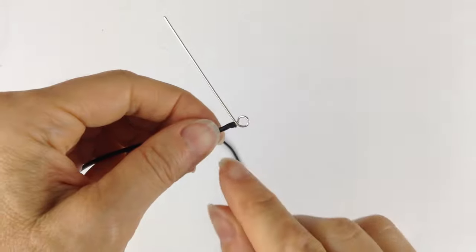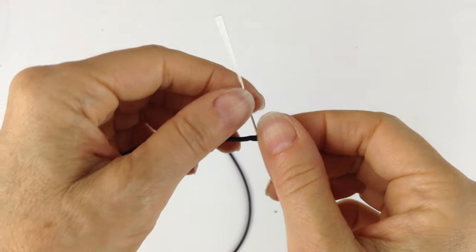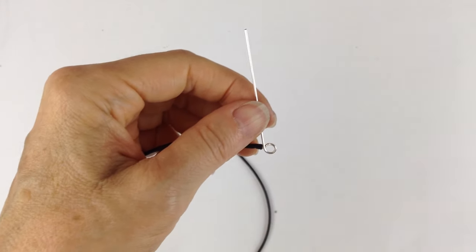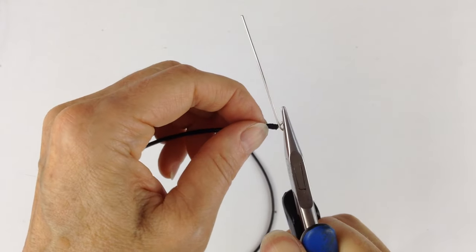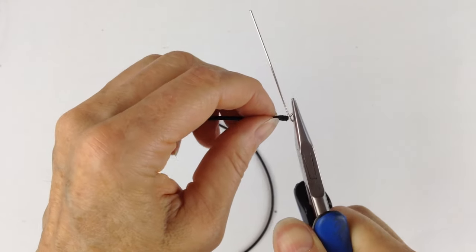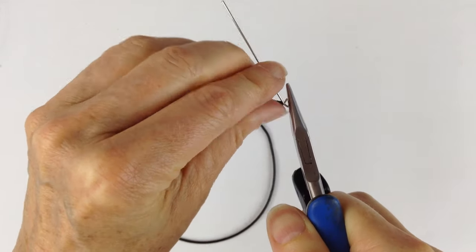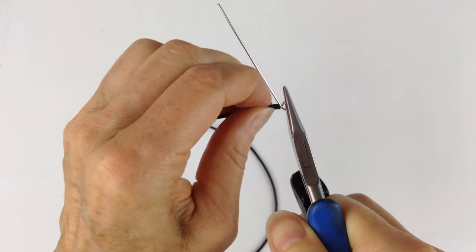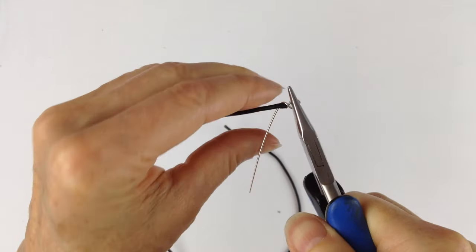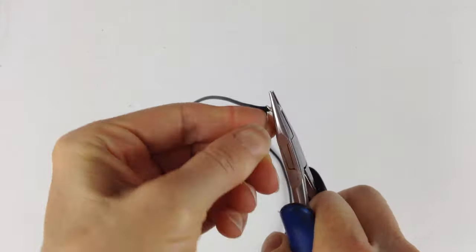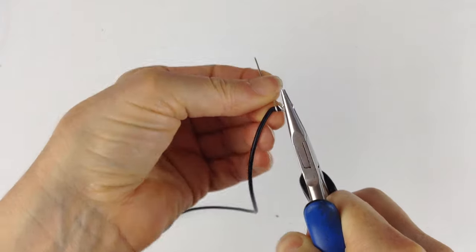And then I'm going to hold this end securely with the flat pliers, and you want to take this silver wire now and wind it around this end. So the idea is you want it to wind around the part where the wire is poked in, and you want to try to do it as evenly as possible.